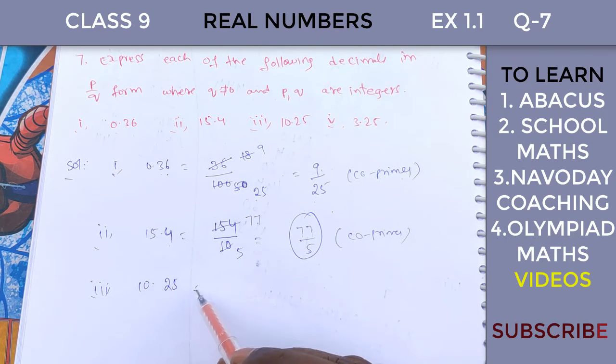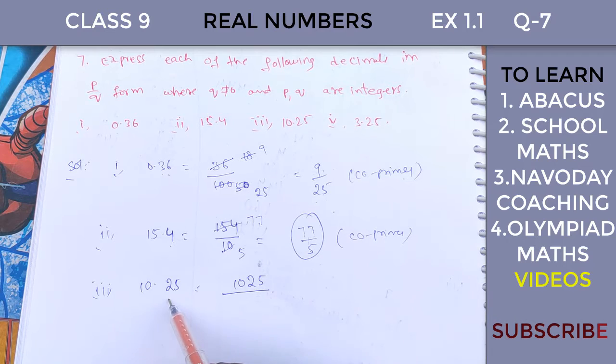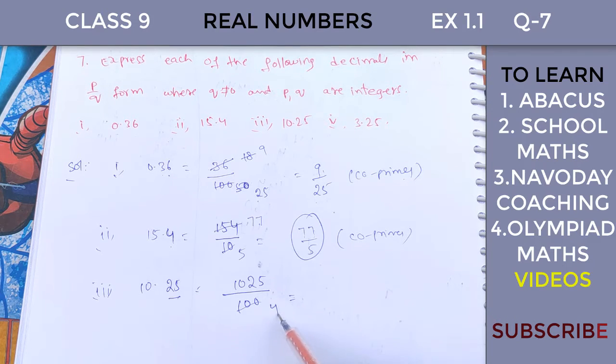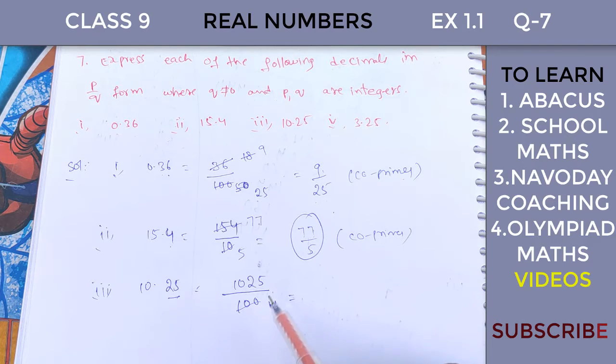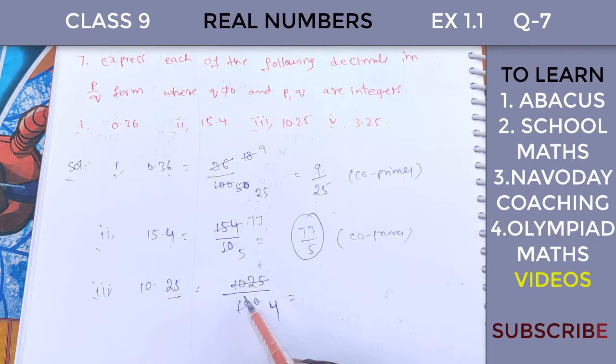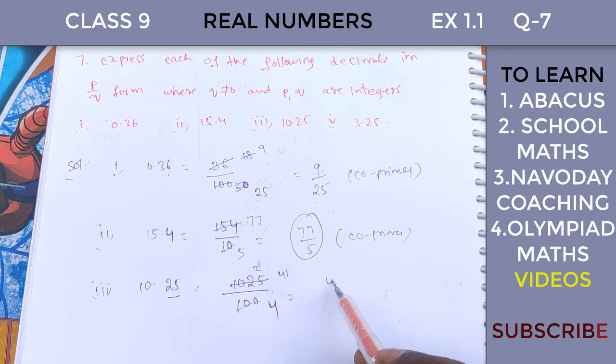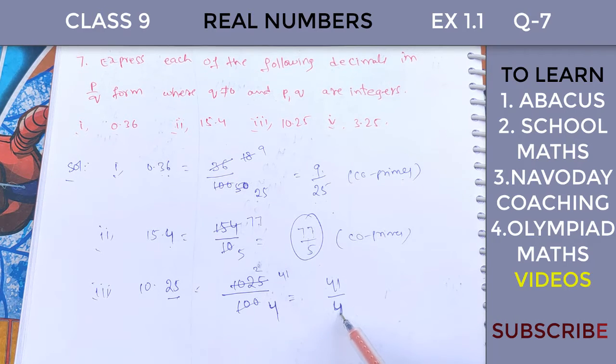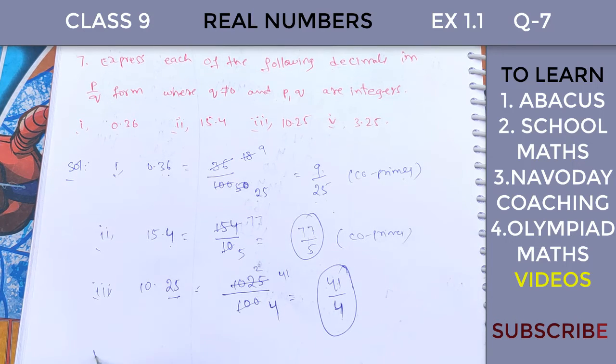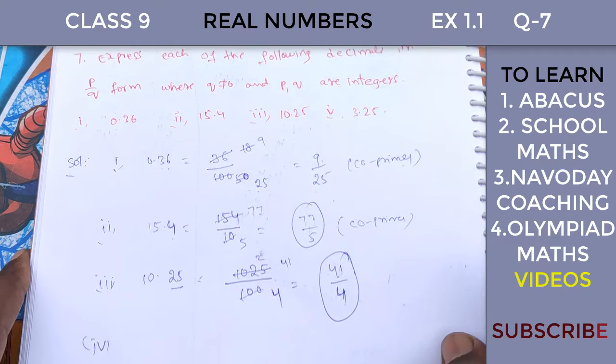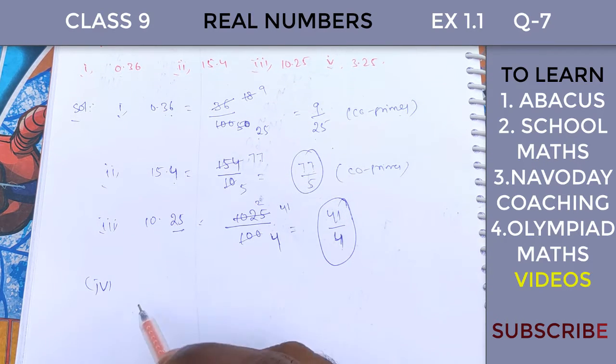Next, 10.25. This number becomes 1025 over 100. We cancel by 2. We cancel on top and bottom. Then we cancel by 5 and by 25. After canceling all common factors, we get the simplified form 41 over 4.